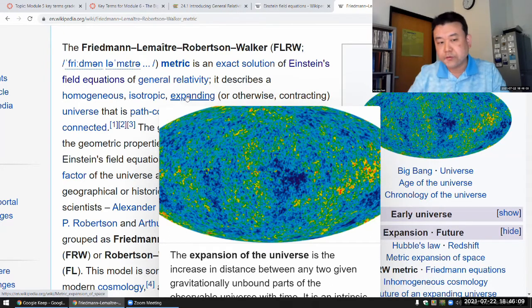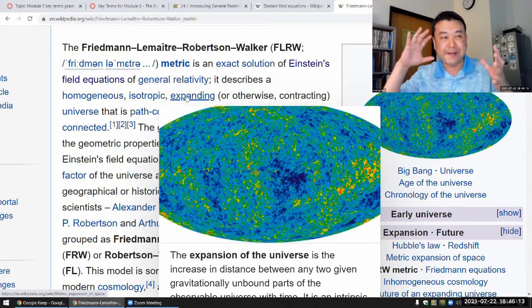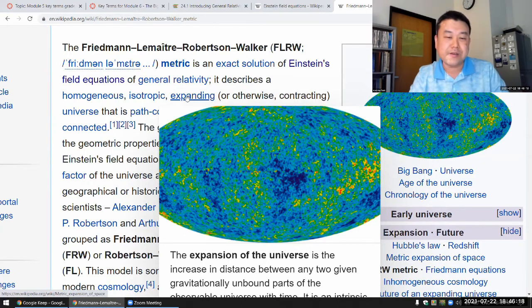So he added a term to his set of equations to make that happen and then he learned of Hubble's discovery. He immediately regretted it. That's why he called it his greatest blunder.